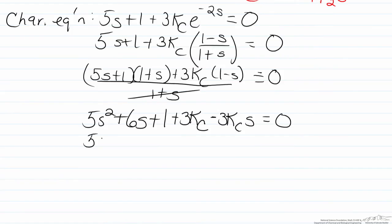So we will have 5s squared, we will take the s terms together, it should be 6 minus 3Kc times s plus 1 plus 3Kc equals 0. So now we have our characteristic equation in a form,